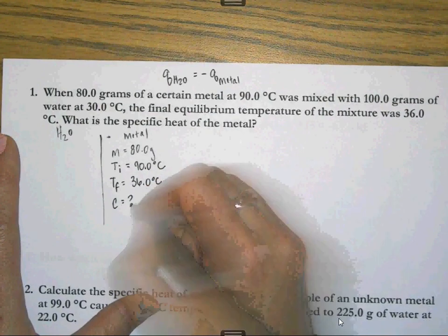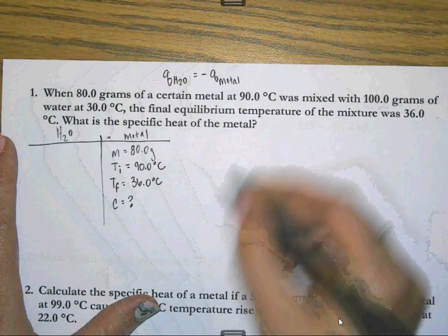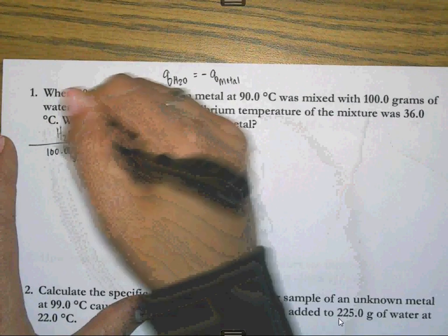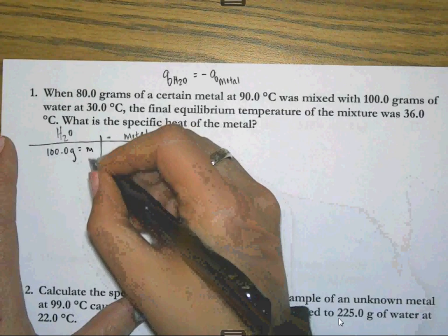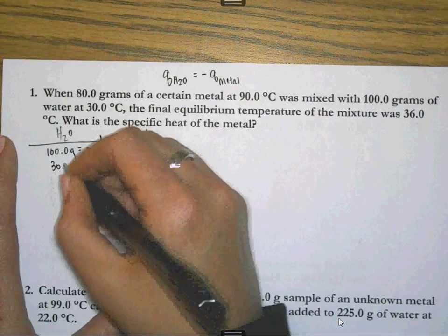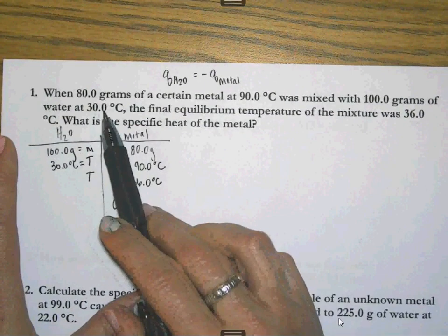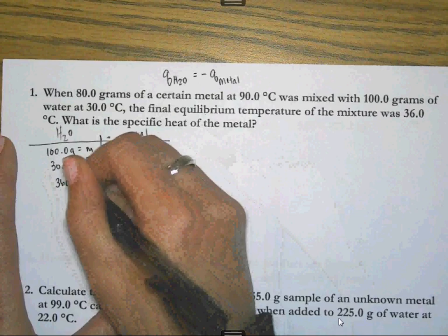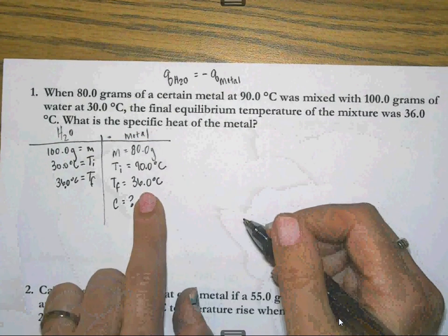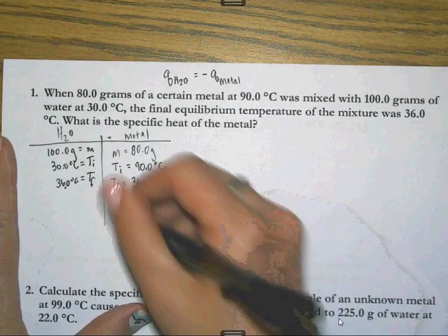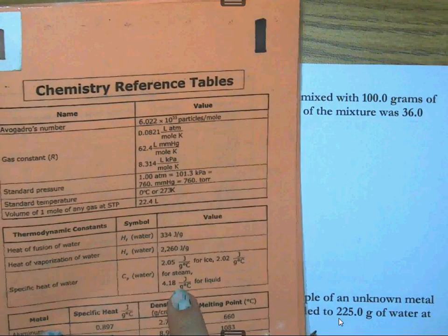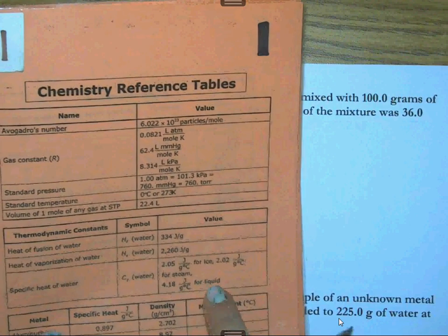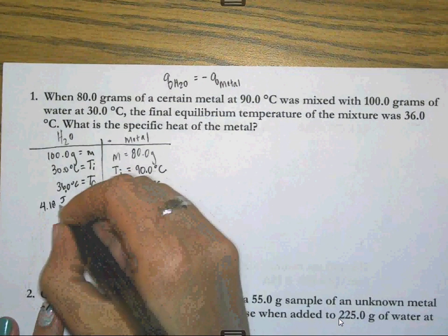Then it wants to know the specific heat of the metal. If I go back over to the water side of things, I know that it was 100.0 grams of water. So that's M. And it says that water is at 30 degrees Celsius. So the question is, is that Ti or TF? Well, again, if it's at 30 degrees Celsius and the final temperature of the mixture was 36, that means 30 is Ti and TF of the water is also 36, just like it was for the metal, which makes sense because they should end up at the same place. Well, I can find the specific heat of water. If I go to my reference table, it has three different specific heats for water. If the water is at 30 degrees Celsius, then that's going to be liquid water. So I'm going to take this number right here. So that's 4.18 joules per gram degree Celsius.